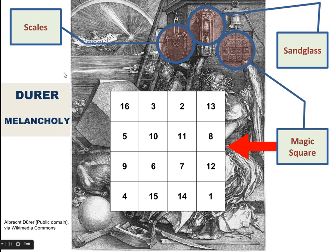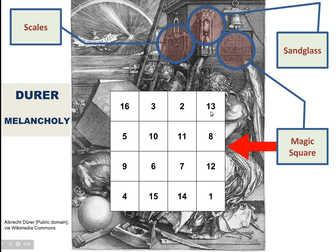We have also a very intriguing symbol: the magic square. The magic square, as you can see here in the magnified view, is made up of several rows and columns of numbers. Every number in the grid can be added up together with the rest of the numbers either on the rows or on the columns. So if you add up this first row: 16 plus 3, plus 2, plus 13 equals 34. This result is going to be the final outcome of every addition in the different columns and rows in the square.